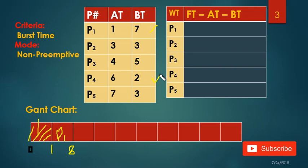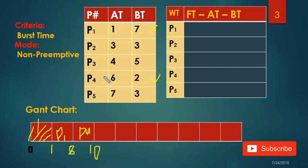I guess P4 has the least burst time, so I'm going to put P4 next. The burst time for P4 is 2, so 8 plus 2 is 10 — total time is now 10. P1 and P4 are done.